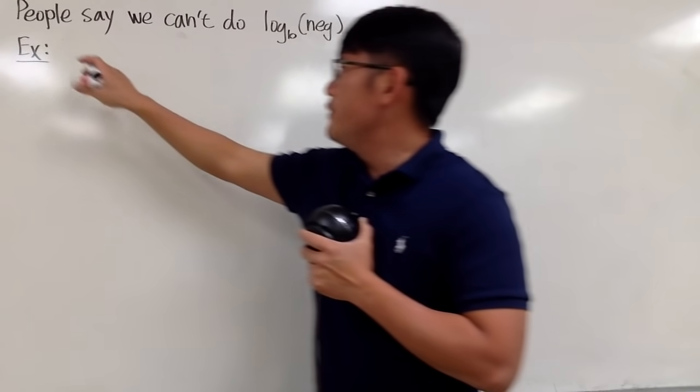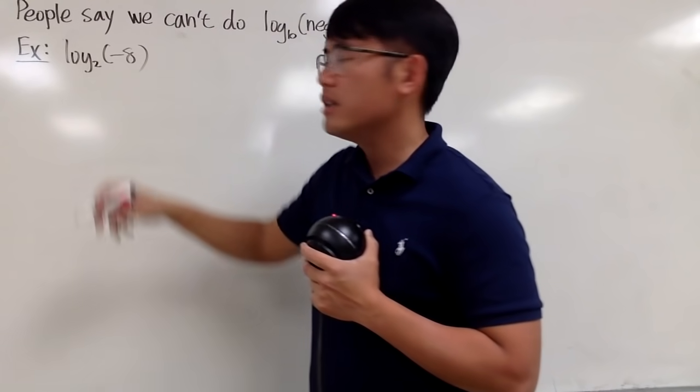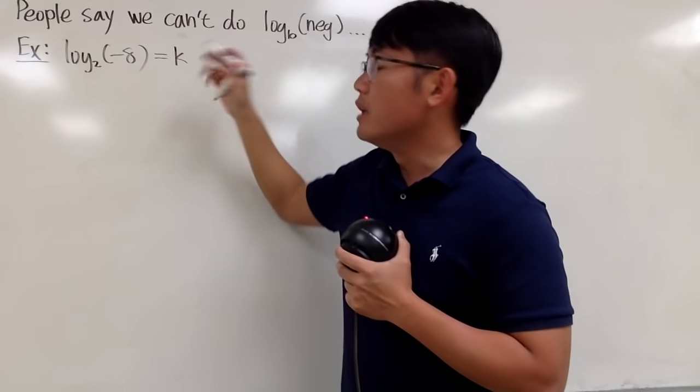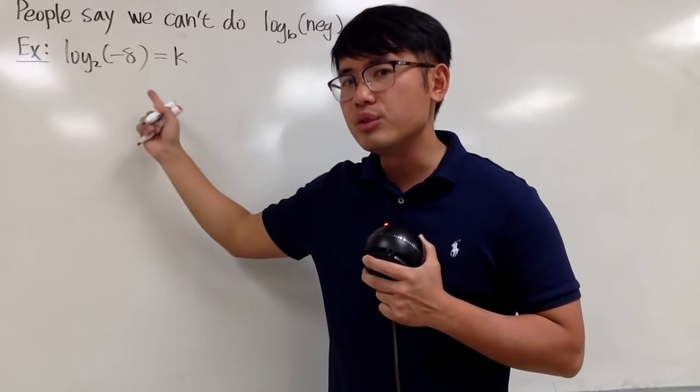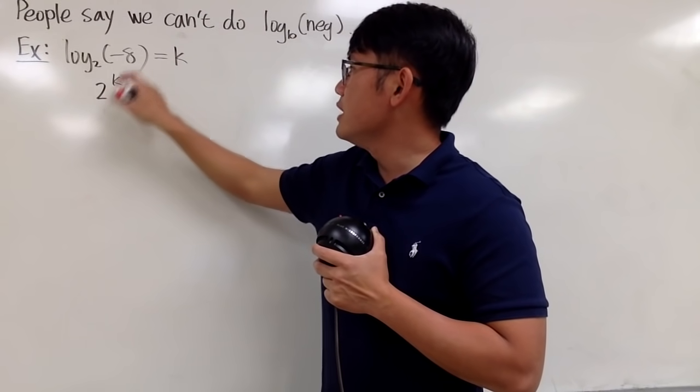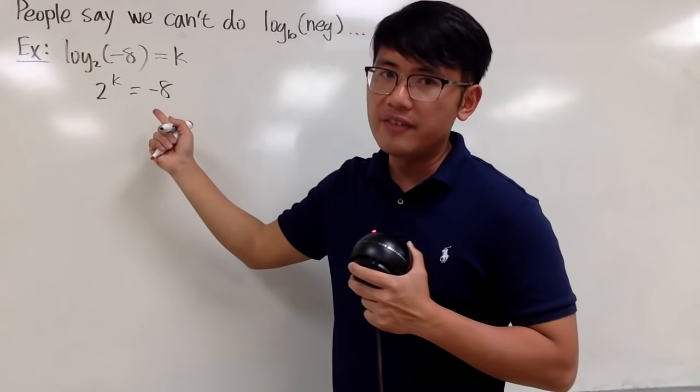Because, for example, if you take a look at log base 2 of negative 8, to see why this doesn't have an answer, we can put this to be k, and then we can change this to an exponential version. Namely, you can just write down 2 to the k's power, and you make this equal to the inside, which is negative 8.